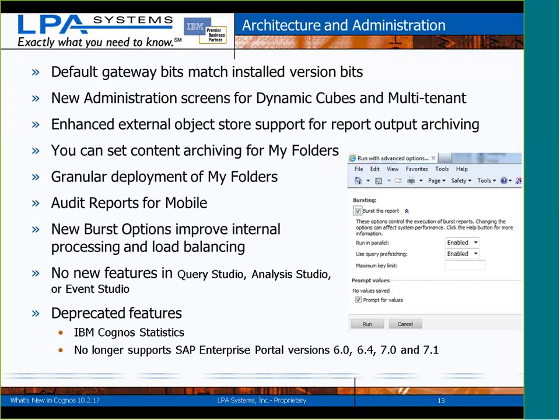There have been no new enhancements to Query Studio, Analysis Studio, or Events Studio in this release. There were a couple of things deprecated: IBM Cognos Statistics, a separate purchase product that gave you a statistics object in Report Studio, has been deprecated and is no longer purchasable for 10.2.1 forward. Also, enterprise portal versions for SAP versions 6.0 through 7.1 — support for those portals has been deprecated in this release.